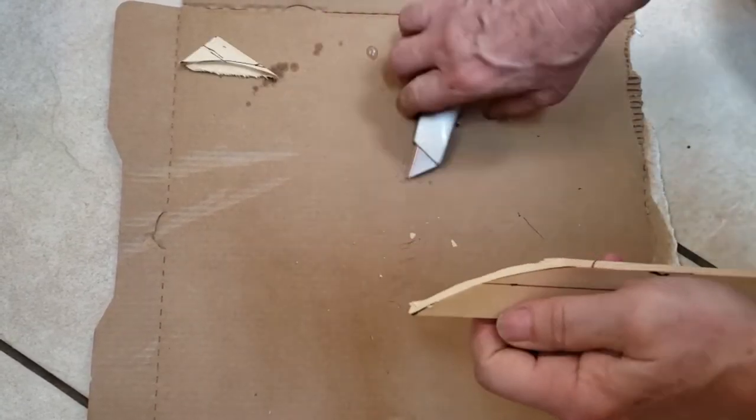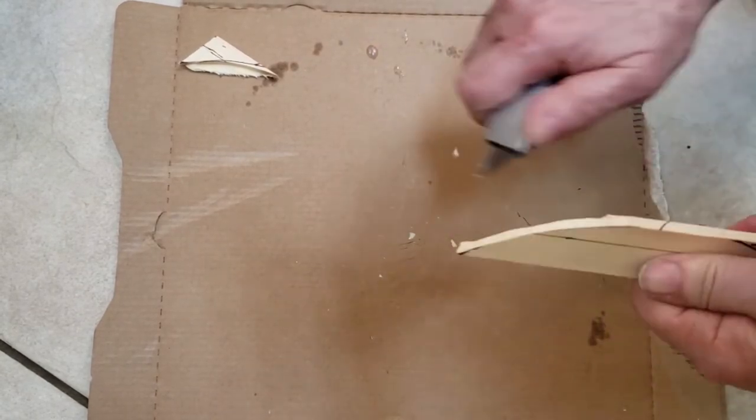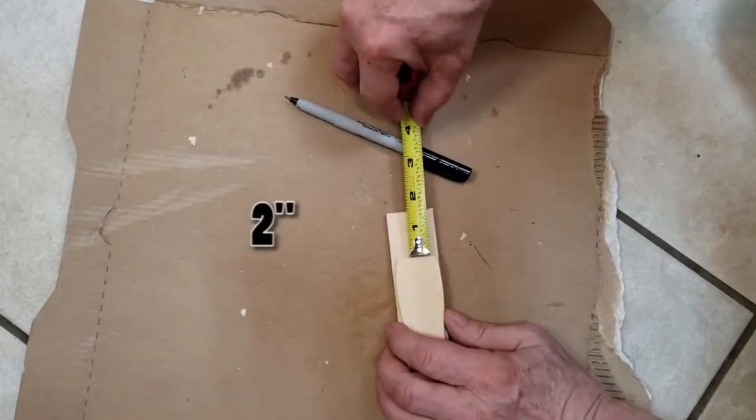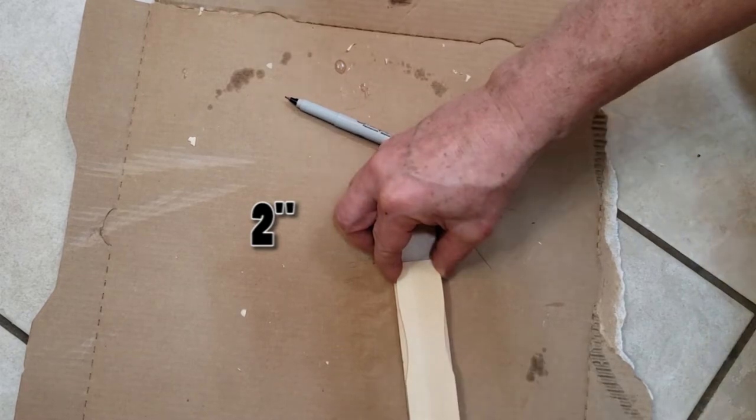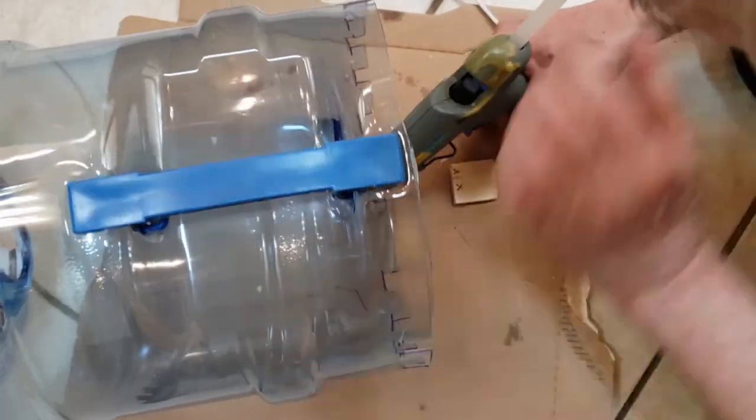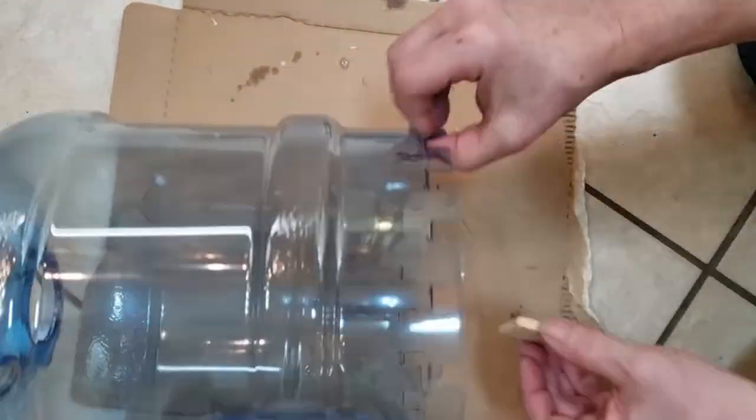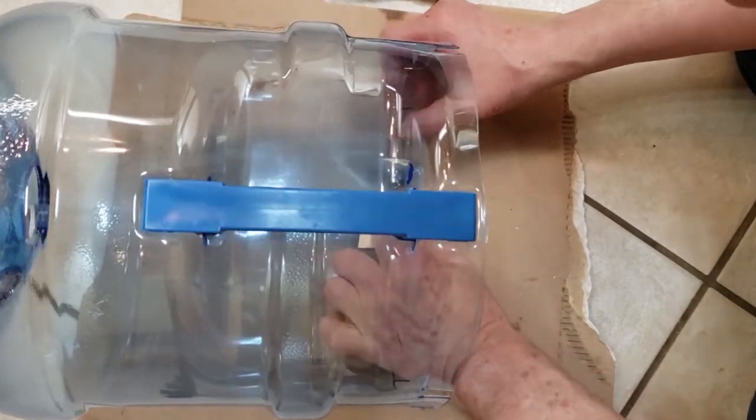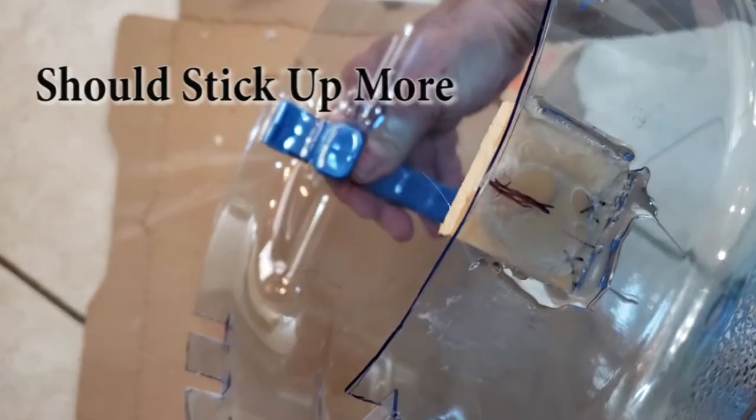This is where the process changes. Cut a piece about two inches long from one of the leftover portions of the five gallon paint stir stick. Glue this piece to the inside of the bottle, centering it on the seam opposite the handle. Leave about a quarter to half an inch sticking up out of the bottle above the cut line, then let it dry.